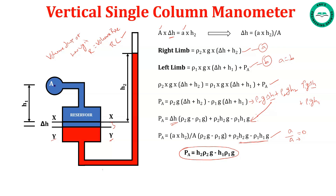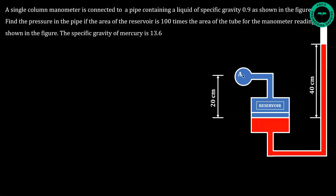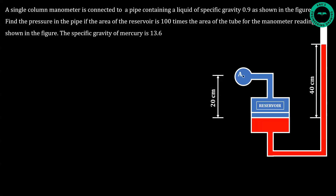Let us solve a simple problem. A single column manometer is connected to a pipe containing a liquid of specific gravity 0.9, as shown in the figure. Find the pressure in the pipe if the area of the reservoir is 100 times the area of the tube, for the manometer reading shown. The specific gravity of mercury is 13.6.